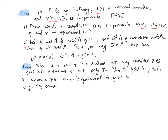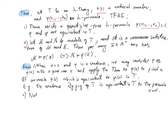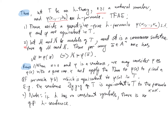For example, the sentence 'exists y, y equals y' is equivalent in T to the formula 'x equals x'. In particular, note that if the language L has no constant symbols in it, then there is no quantifier-free L-sentence.